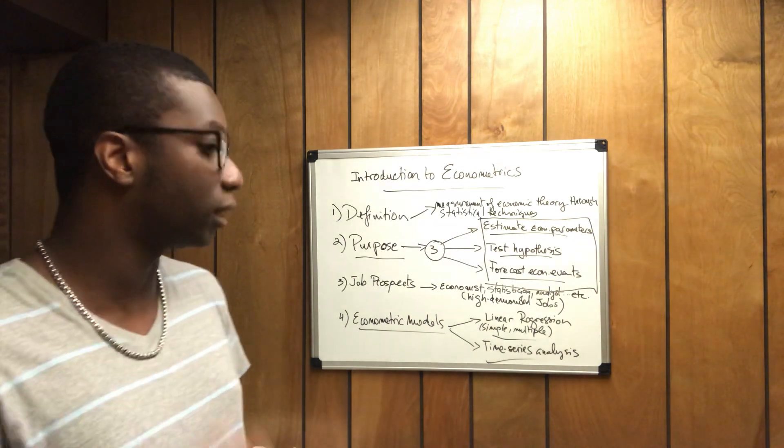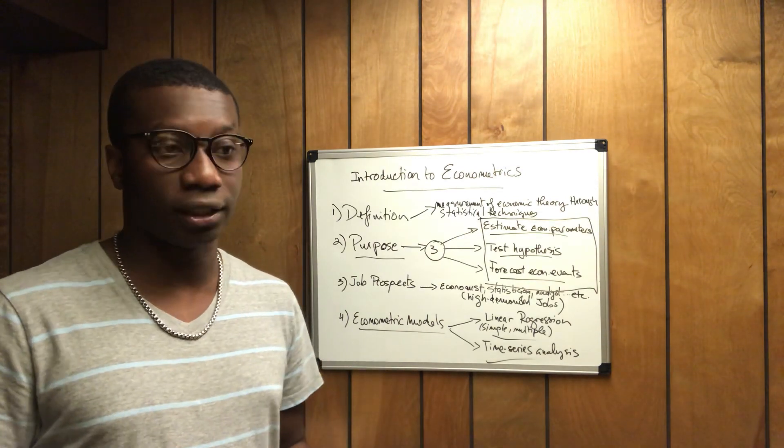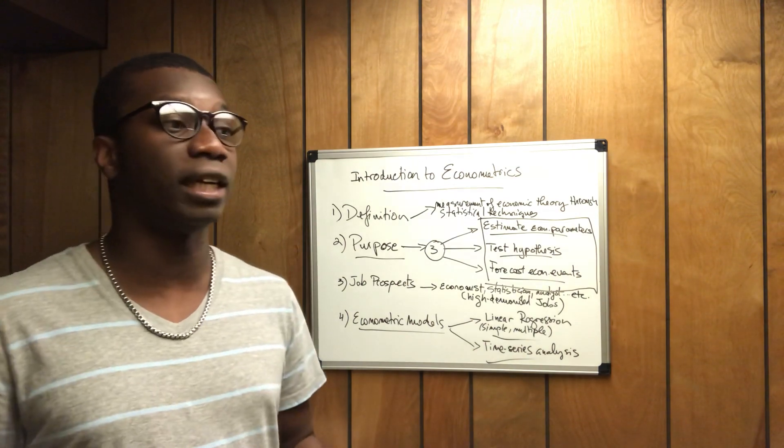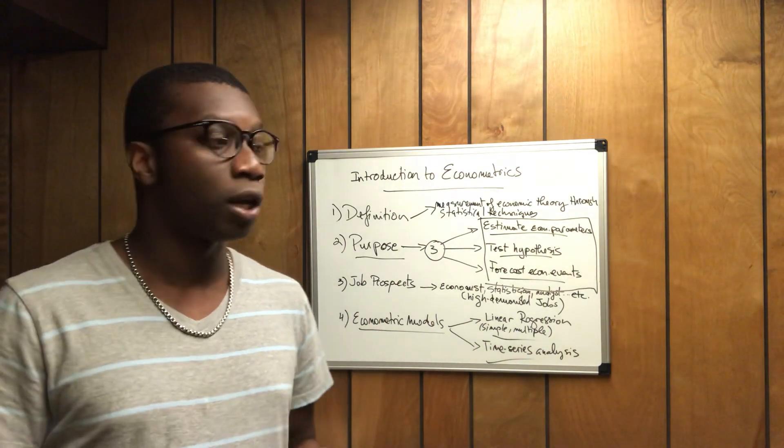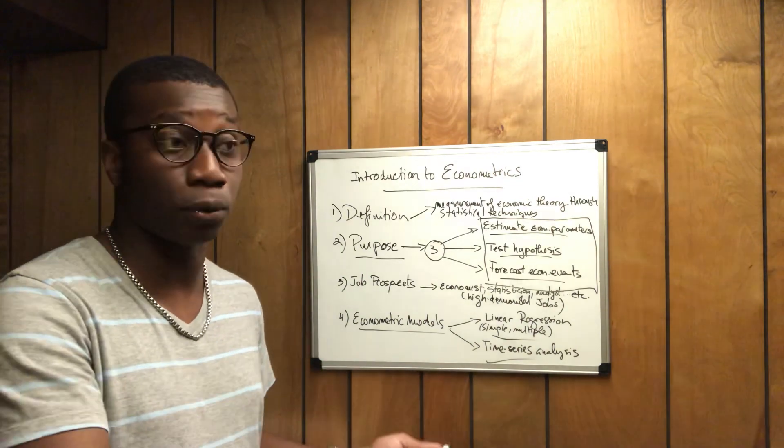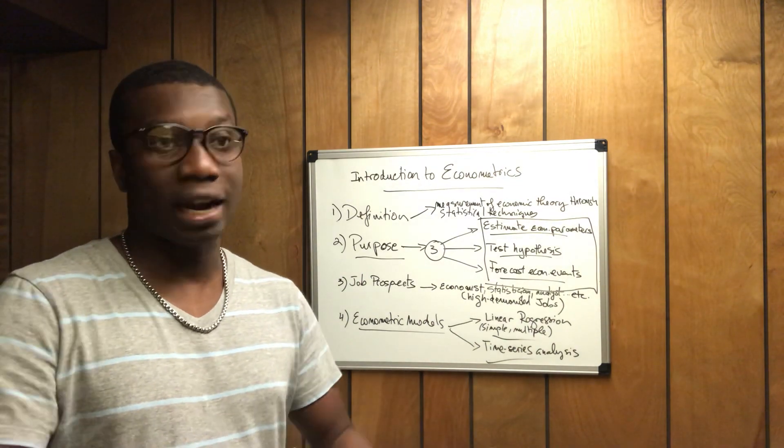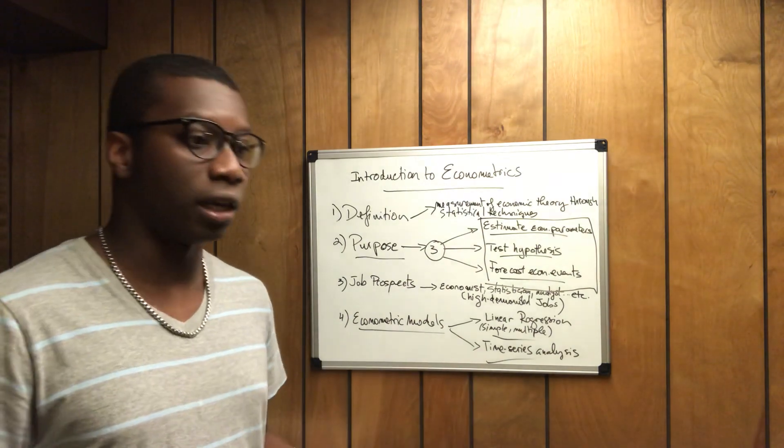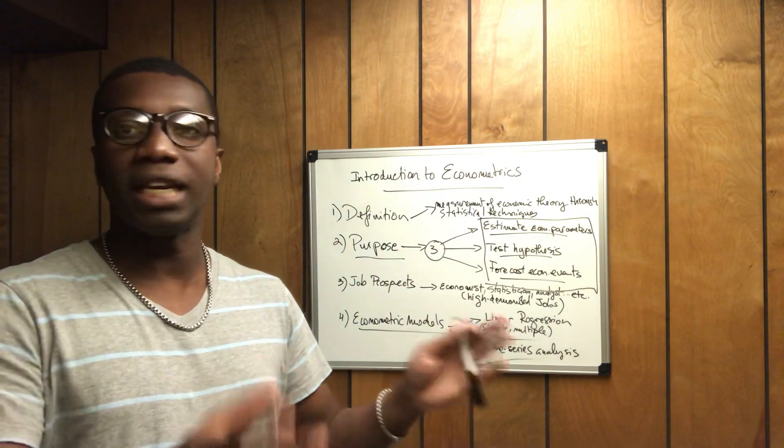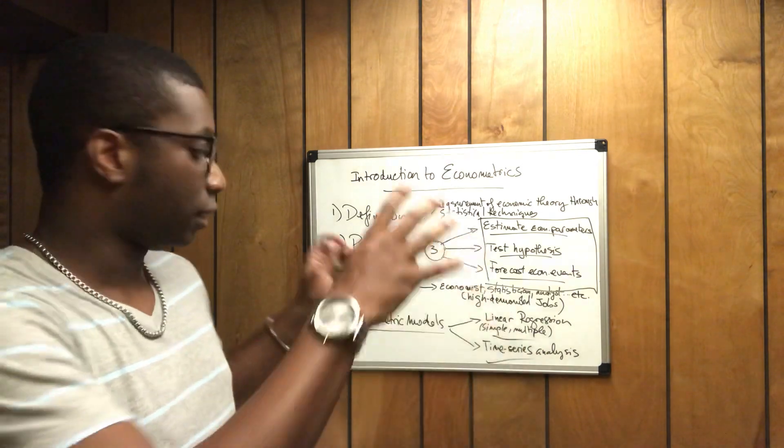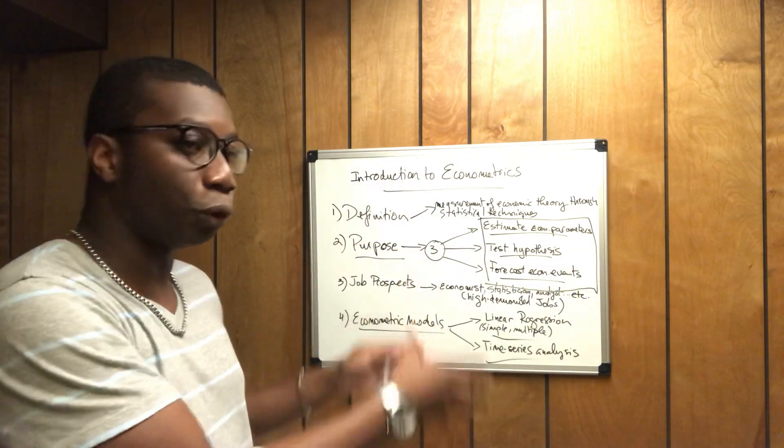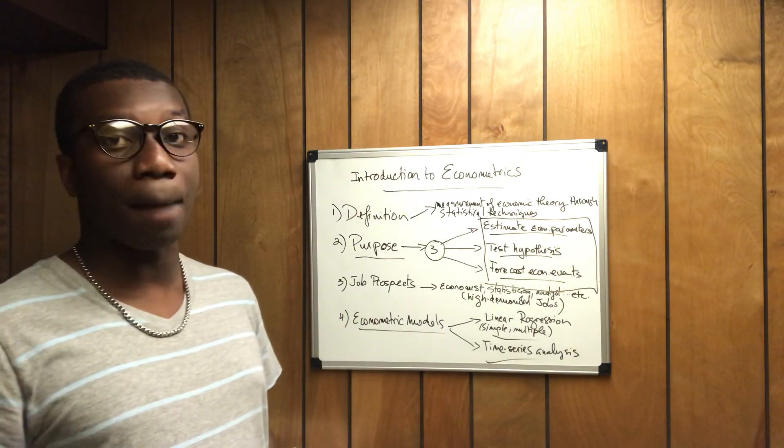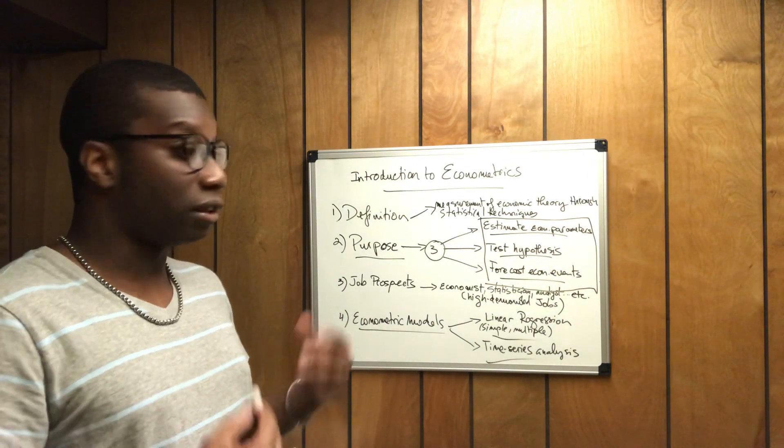The data we use in econometrics are observational data or historical data. Observational data is simply data that have been used before compared to experimental data where you run samples on people like they do in the medical industry or in psychology or in many other fields. But in econometrics, we use historical data mainly.